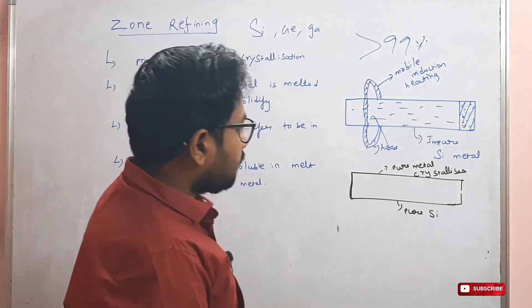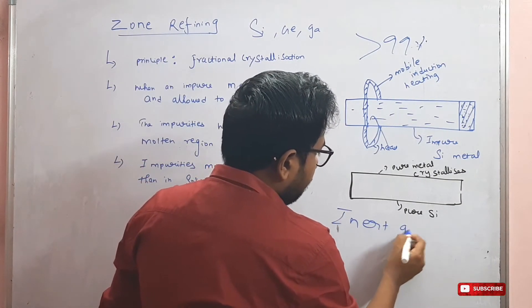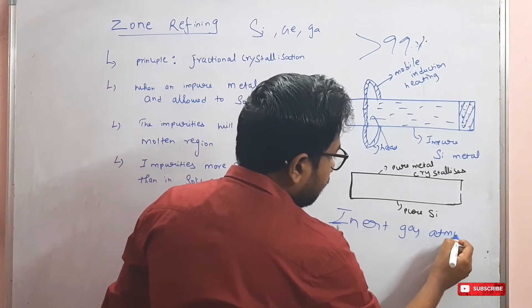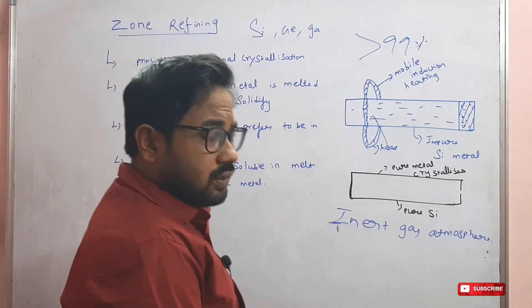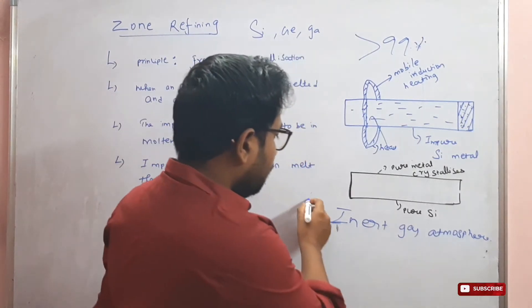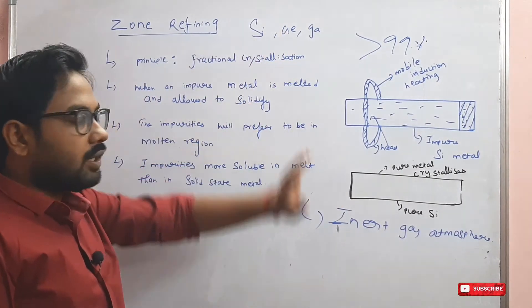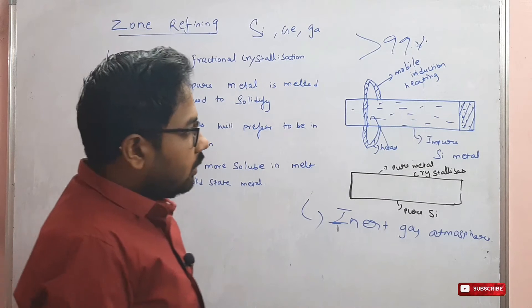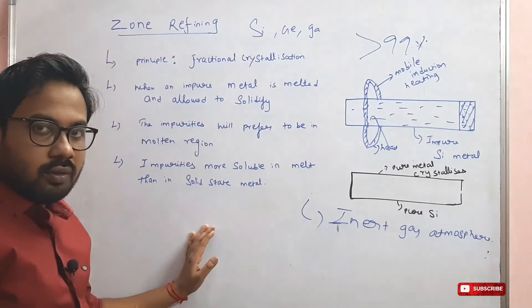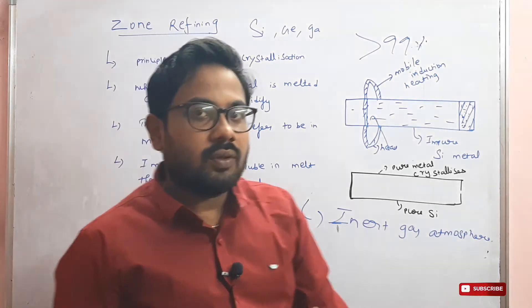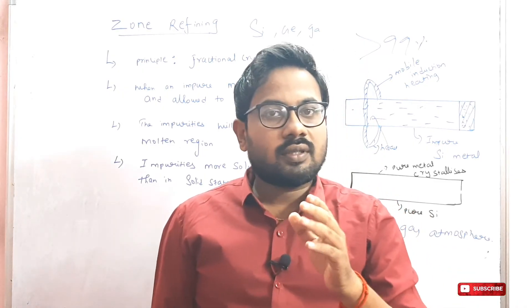We keep an inert gas in the atmosphere during this process. This is an inert atmosphere, which is a very important part of this method. For metals like silicon, germanium, and gallium, we can use this method. This method is very useful.